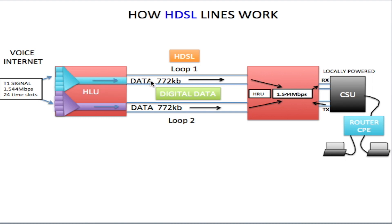The HLU divides this data in two: it sends half of the data on loop 1 and the other half on loop 2. When the HRU receives this data, it puts it back together as 1.544 megabits per second and sends it off to the CSU. When the CSU receives this data, it acts as an interface between the HRU and the router — it has a T1-type interface on one side and an Ethernet interface on the other, sending the 1.544 megabits of data through to the router.